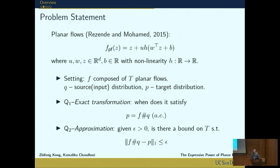First, exact transformation: when does it satisfy that p is equal to f over q almost everywhere? And second, approximation: given small epsilon, is there a bound on the number of layers t such that f over q approximates p in L1 norm or in total variation distance to within epsilon?